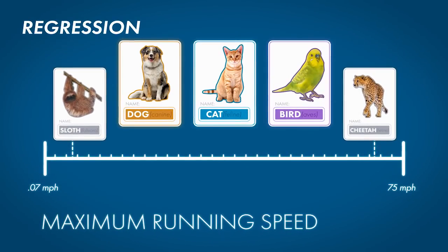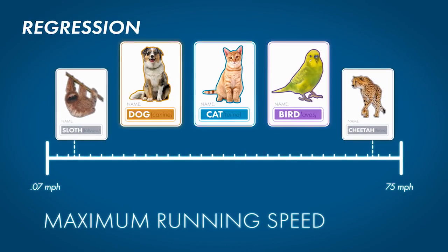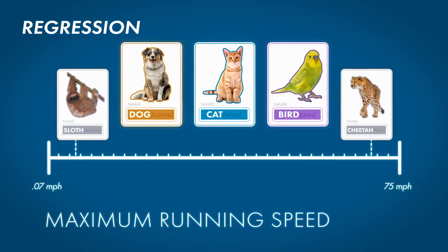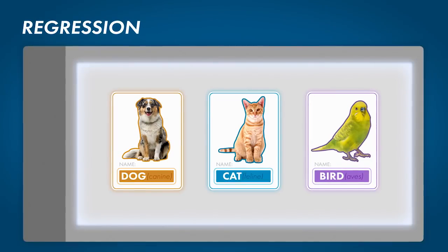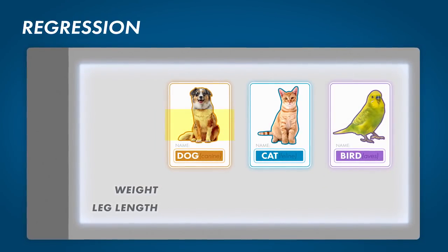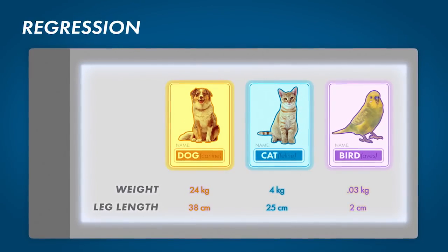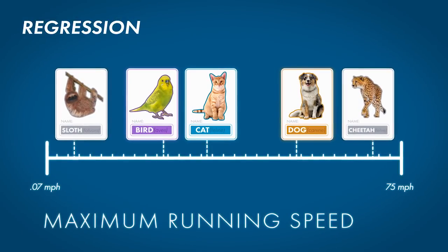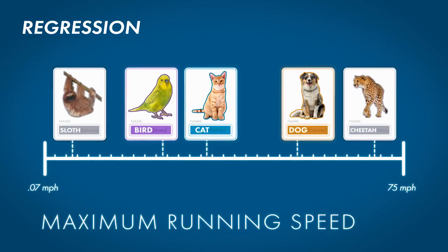To build a model that will predict speed, we do what we did before. Select features that may be relevant. For example, let's try the weight of an animal and how long its legs are. The model uses these features to estimate where the animal lands on that speed continuum.